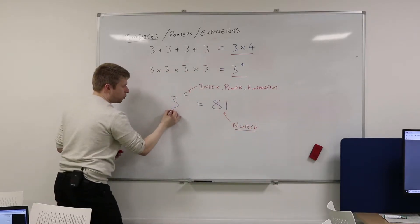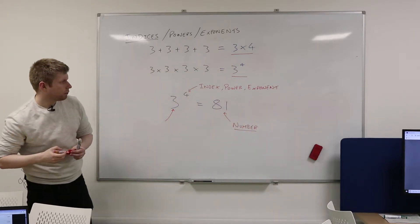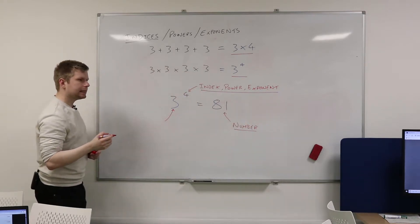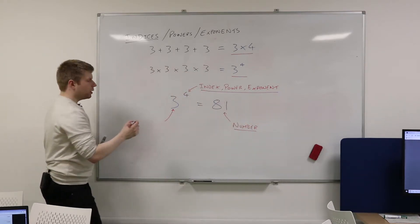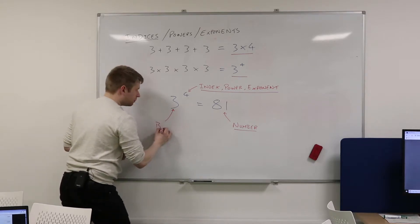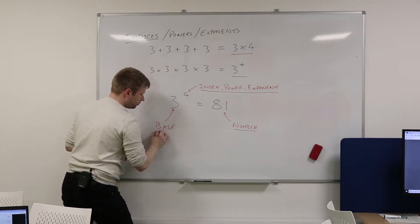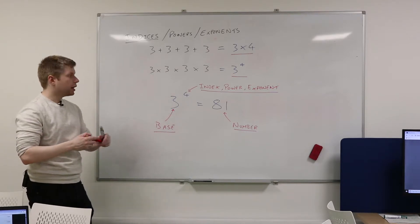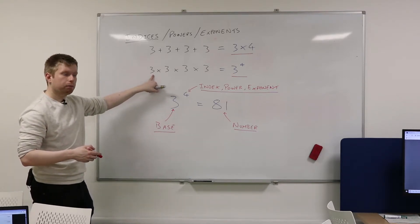Now, what would we call this 3? What would we call the number down here? Any ideas? Base. Base, good. So 3 is the thing which we multiply together. We call that the base. That's the thing which we start with, the 3 down here.